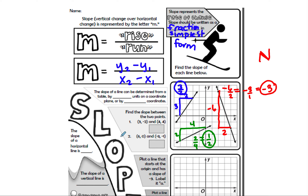The slope of a line can be determined from a table, by counting units on a coordinate plane — which is what we just did — or we can subtract. Now we're going to use subtraction. Find the slope between the two points (3, -2) and (4, 4).